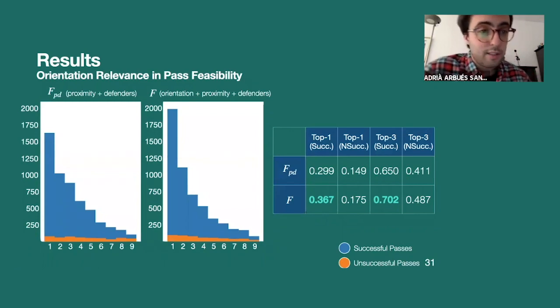So we're going to see these different histograms. Blue bins belong to successful passes and orange bins belong to non-successful passes. And as you can see in this table, we're comparing at this point the orientation relevance. So the first graphic only uses proximity and defenders and the second one orientation plus proximity plus defenders. And as you might see, there's a boost of seven percent in top one accuracy and five percent in top three accuracy, which is quite a lot bearing in mind that we are working with more than 6,000 passes. And at the same time, we're boosting the difference between successful and non-successful passes, which means that orientation really plays a vital role in the outcome of pass events.